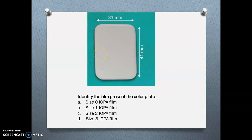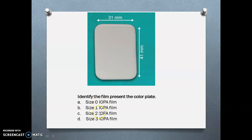Identify the film in the color plate: this is a Size 2 IOPA film — 31 mm × 41 mm. Remember: Size 0 is for children — 22 × 35 mm; Size 1 is for adult anterior — 24 × 40 mm; Size 2 is for adult posterior — 31 × 41 mm; Size 3 is for occlusal radiographs — 57 × 76 mm.